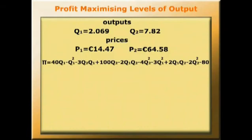And we've worked out what Q1 and Q2 is. So we can simplify a little bit here and write that profit is 40Q1 minus 4Q1 squared plus 100Q2 minus 6Q2 squared minus 3Q2 times Q1 minus 80.